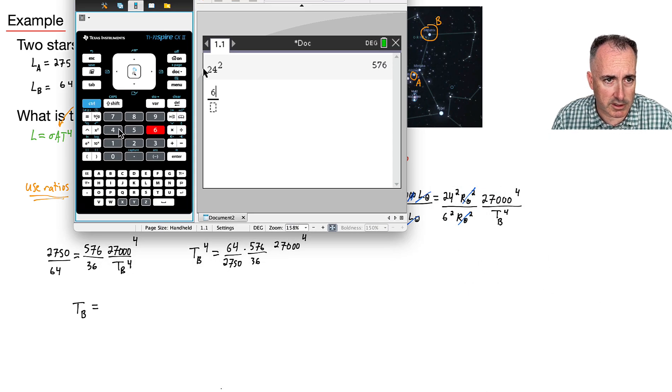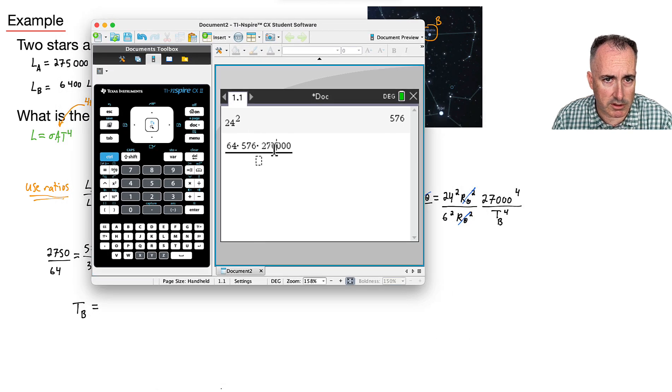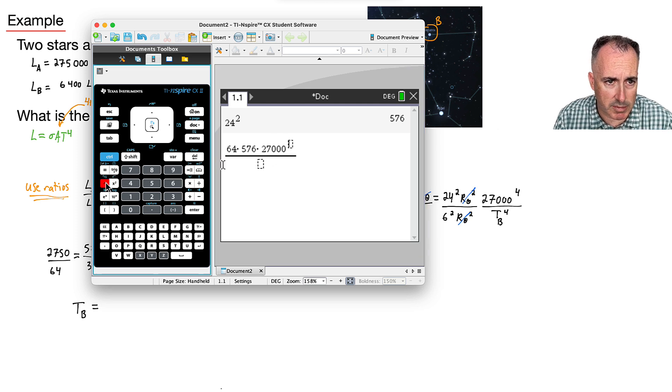I'll say 64. What else is on the top? I've got a 576. What else? I've got 27,000. Wait, how many zeros was it? Yeah, 27,000. Oh, I got too many zeros. There it goes, 27,000. But don't forget, this thing is to the power of four.